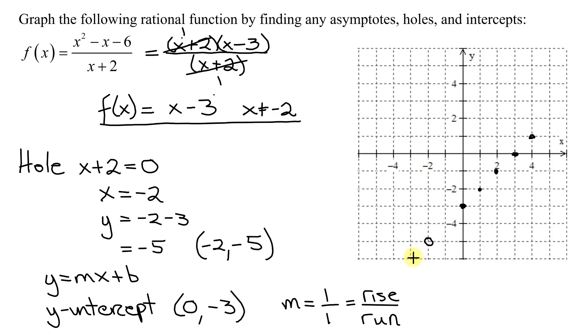So now, graphing my line. There's the graph of my line. Put arrows on both ends. So that is the graph of this rational function here, which turns out to be a straight line with a hole when x equals negative 2.